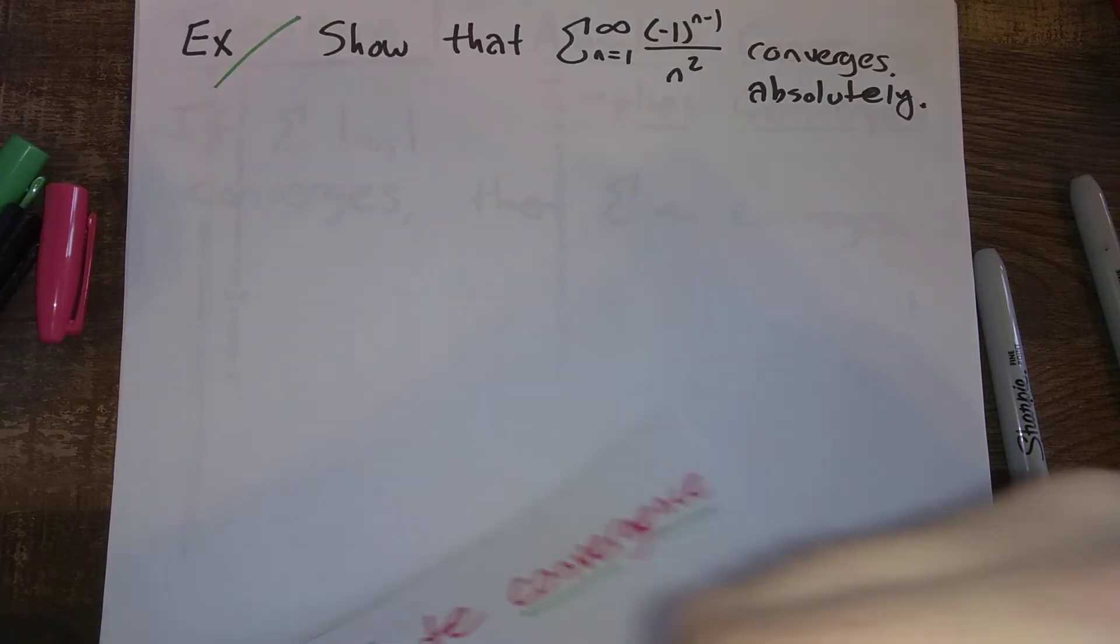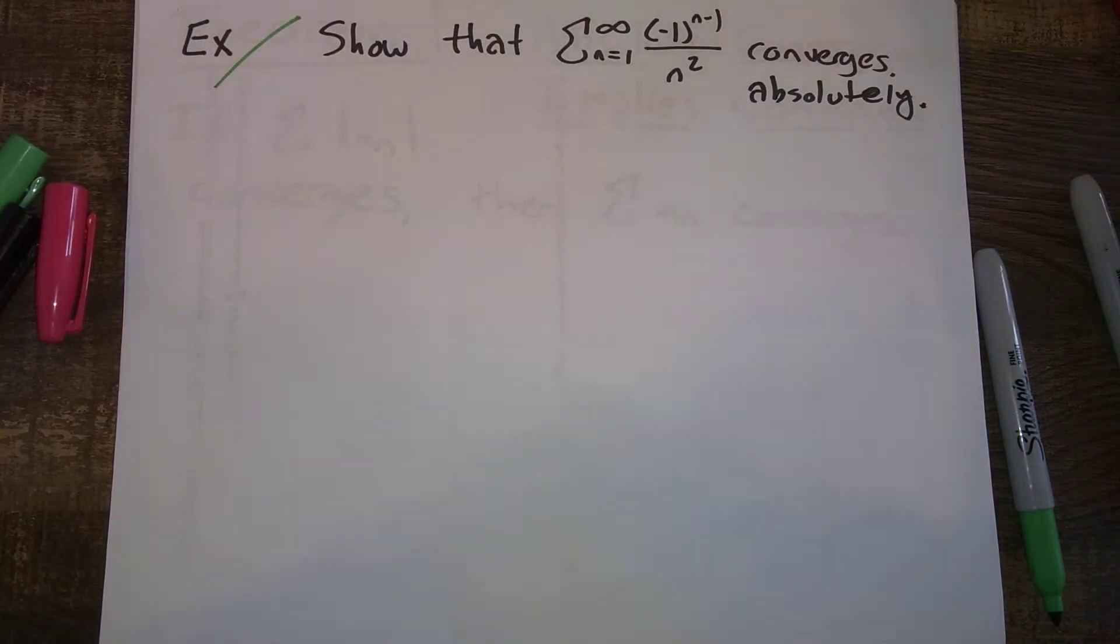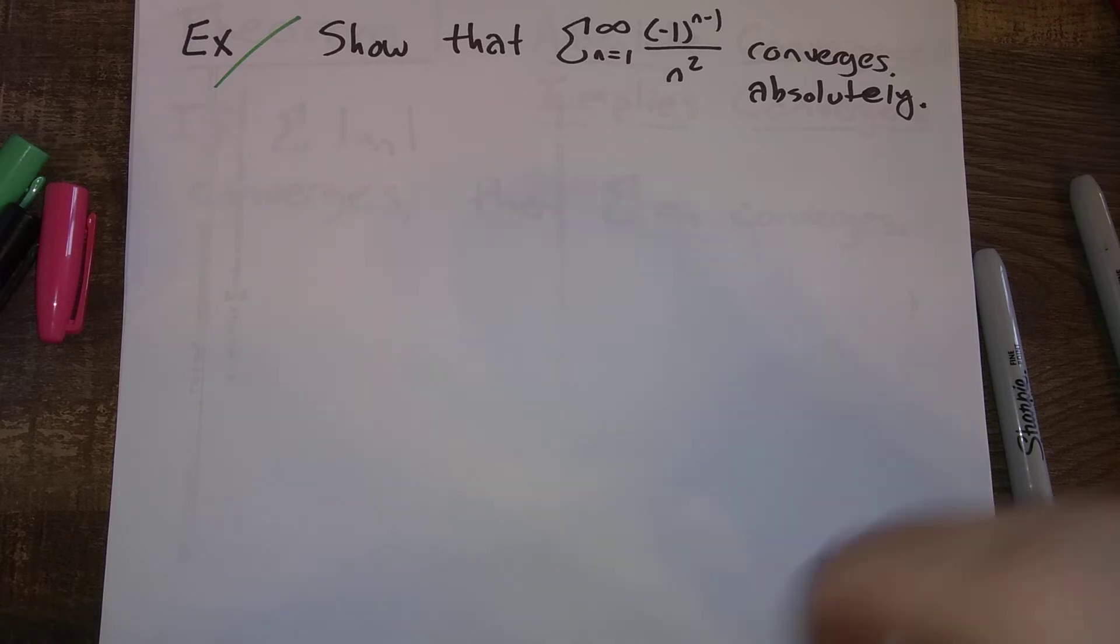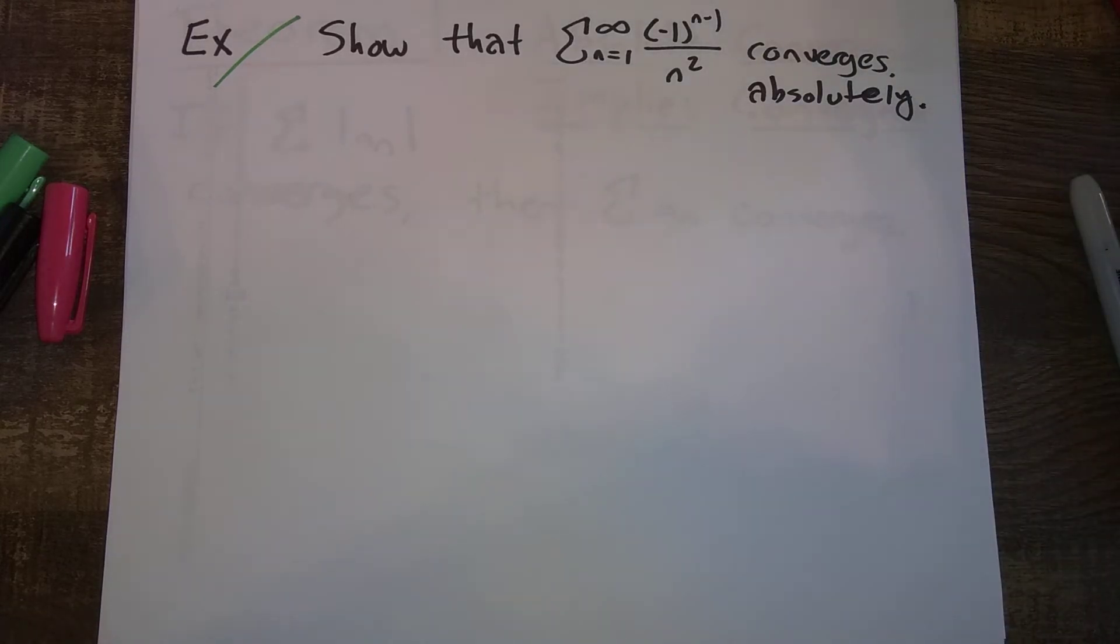So let's do a first example here of a series that is absolutely converging. We want to show that the sum from n equals one to infinity of (-1)^(n-1) divided by n squared converges absolutely.